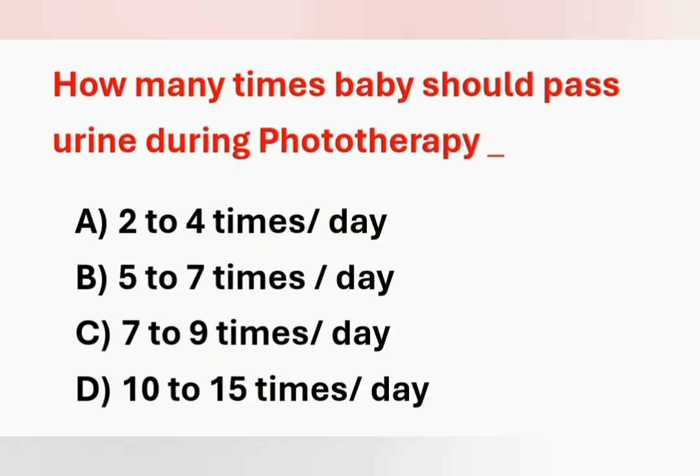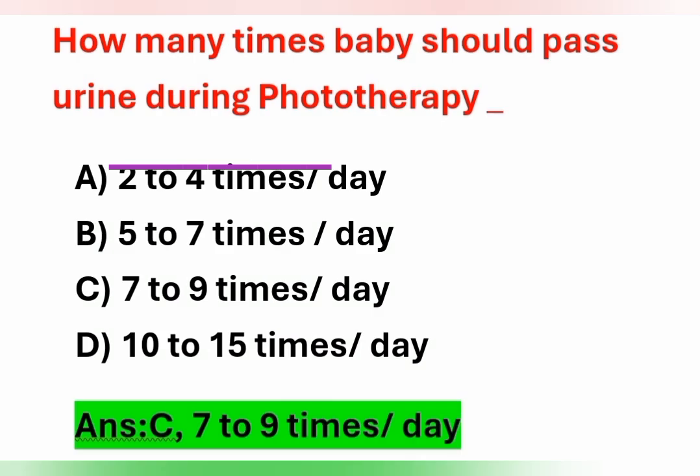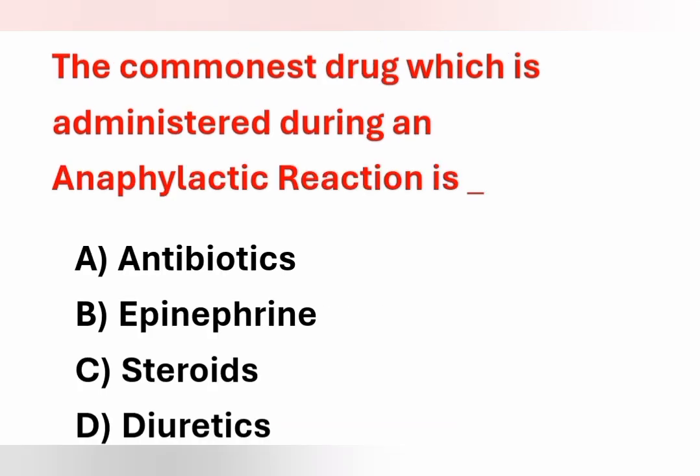Next question: how many times should a baby pass urine during phototherapy? Options: Option A – two to four times a day. Option B – five to seven times a day. Option C – seven to nine times a day. Option D – ten to fifteen times a day. During phototherapy, a baby should pass urine seven to nine times a day. Option C is the correct answer.